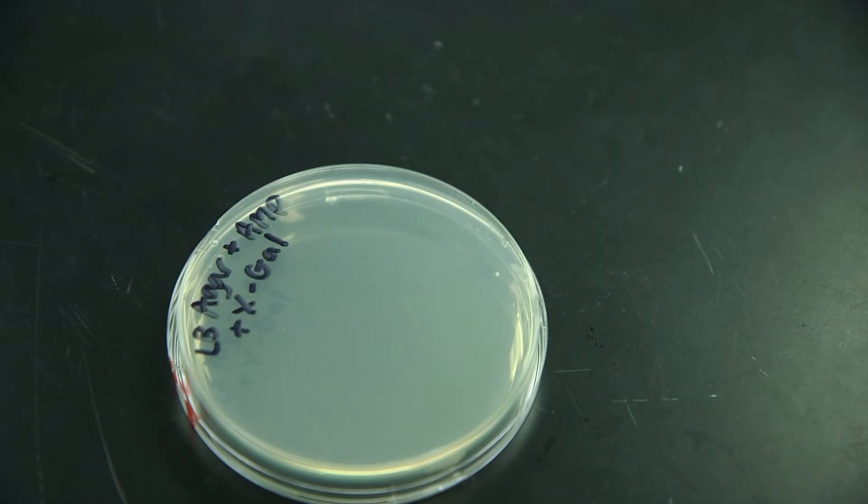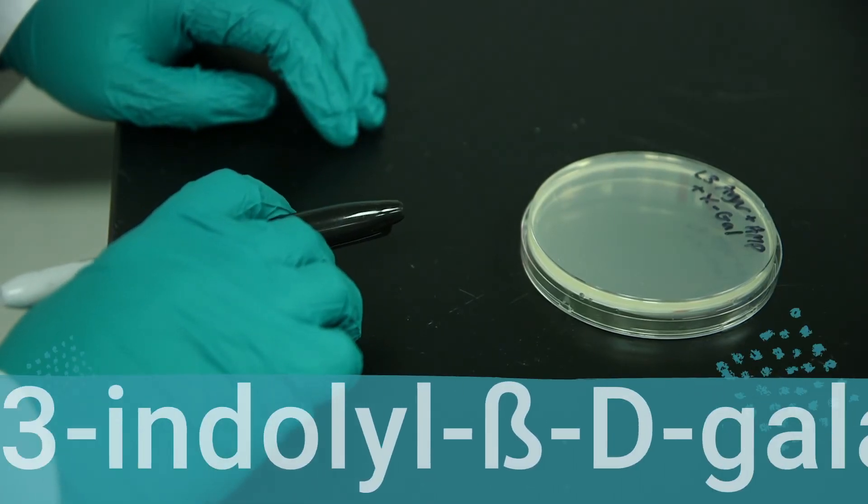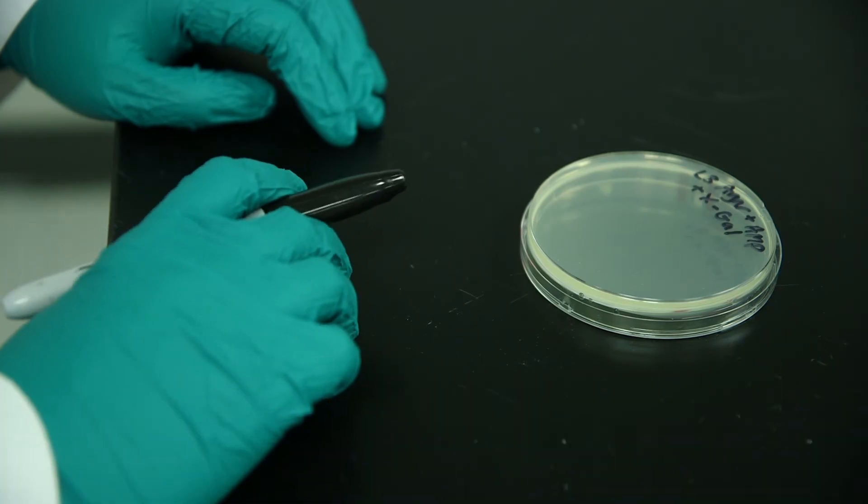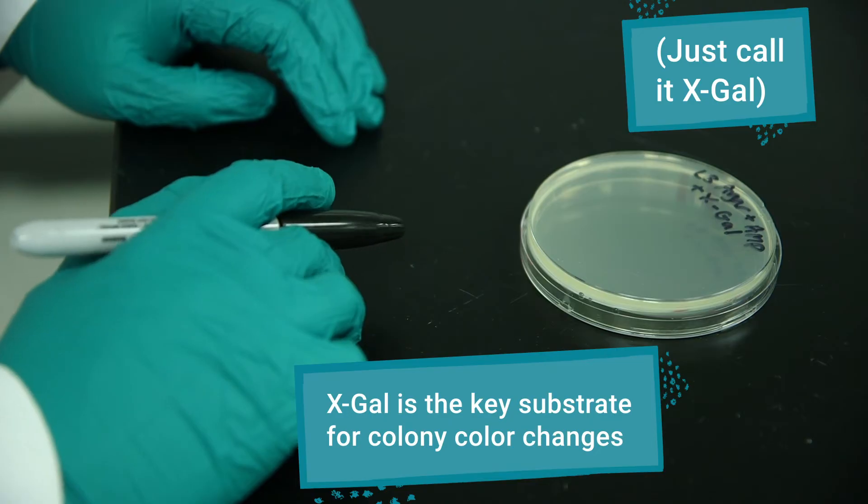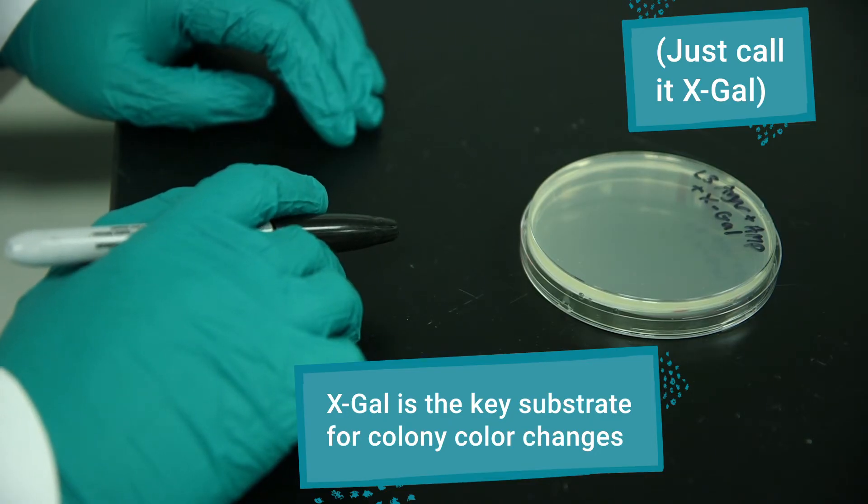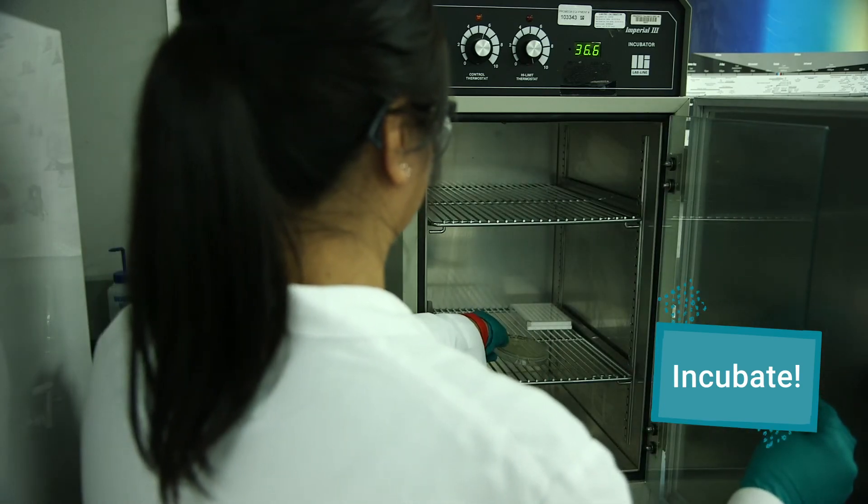For blue-white cloning, these plates should also be treated with 5-bromo-4-chloro-3-indolyl-beta-D-galactopyranoside. That's a mouthful! You can just call it X-gal. X-gal is the key substrate component for making the colonies turn different colors. Once the cells are plated, incubate them overnight as normal.